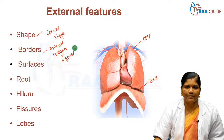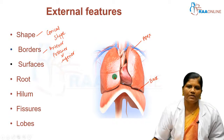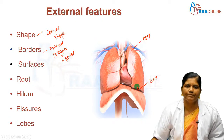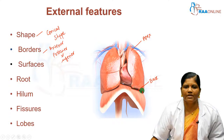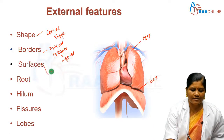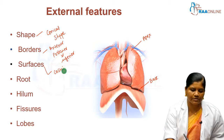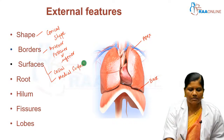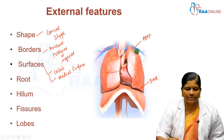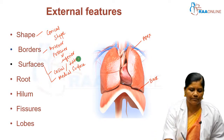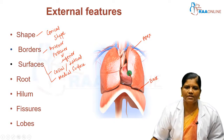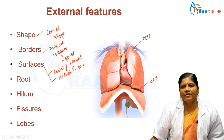The shape of the lung is conical. It has an apex at the top and a base at the bottom. It has three borders: the anterior border located anteriorly, the posterior border near the vertebral column, and the inferior border. The surfaces of the lung are the costal or lateral surface, related to the ribcage, and the medial surface, related to the mediastinum anteriorly and vertebral column posteriorly.